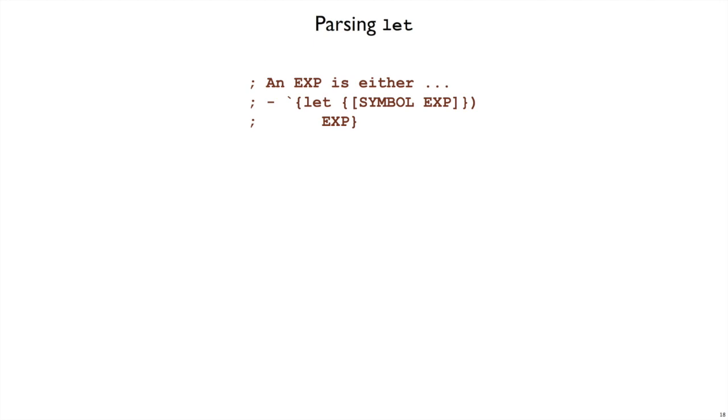Since we're adding the let form to curly, we need to update our parser to convert a let s-expression to a let e variant of exp. I'm showing you the s-expression notation one more time here. An exp is either any of the other things we've had before, or it's a list-like s-expression that starts with a let symbol and so on.